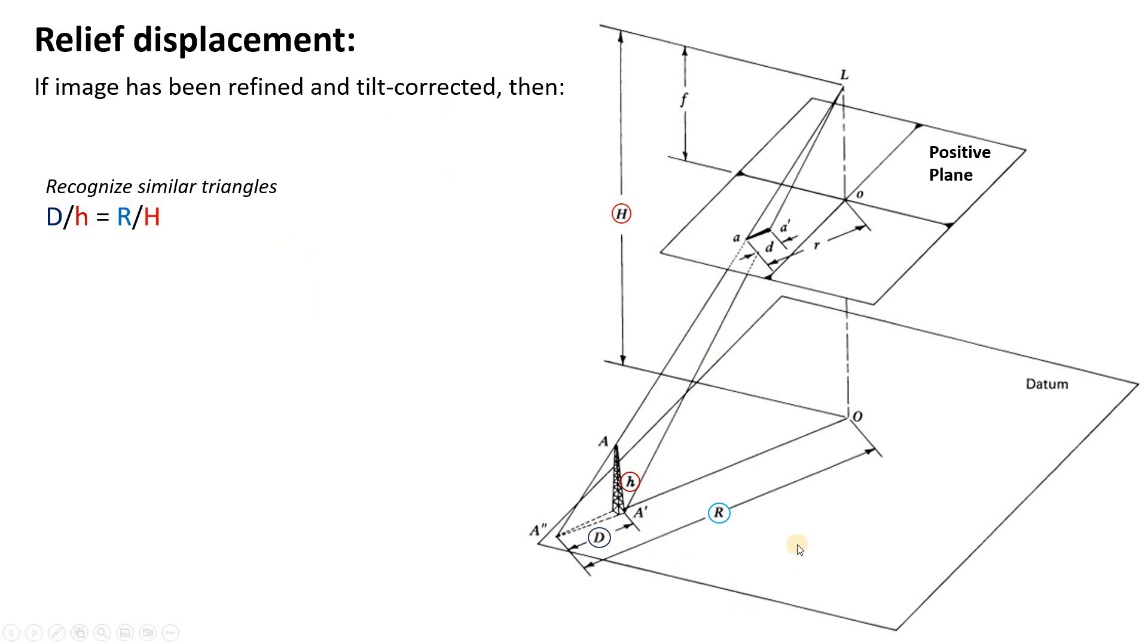So first let's orient ourselves. We have a camera lens L up here. Here's our positive plane, which is mapping out, this is our positive image plane, so this is going to be our image. And it's mapping out the land surface down here, and we're assuming some kind of horizontal datum, which in this case corresponds with the base of the tower.